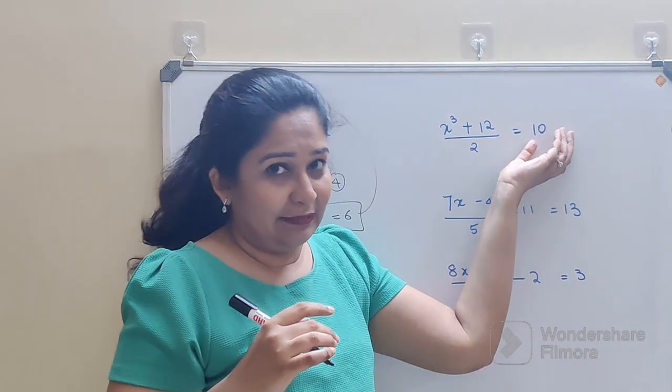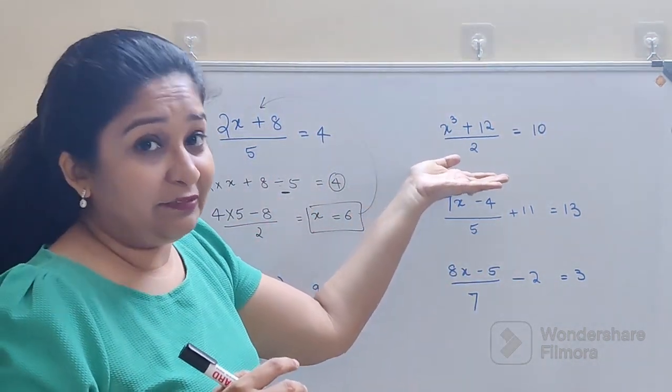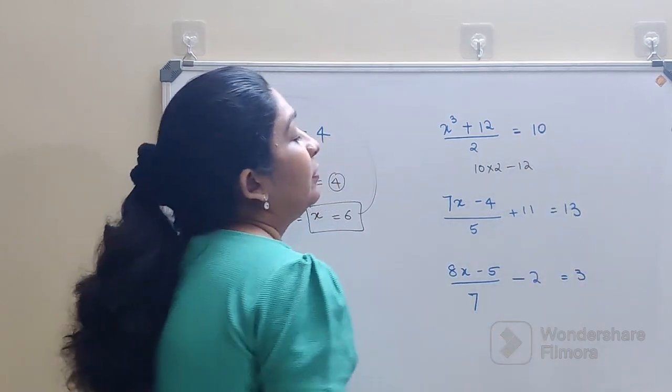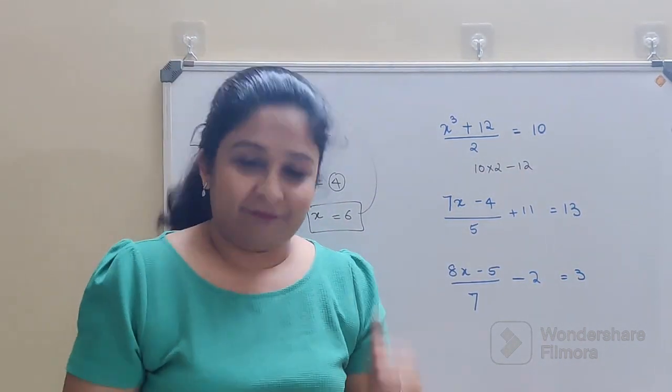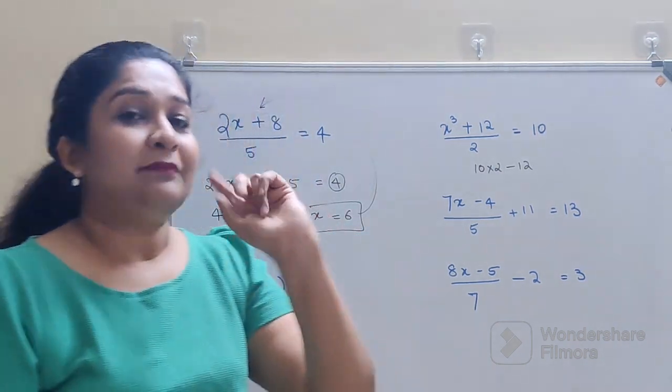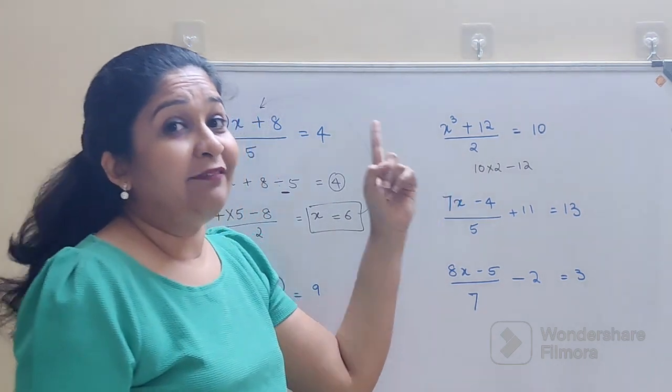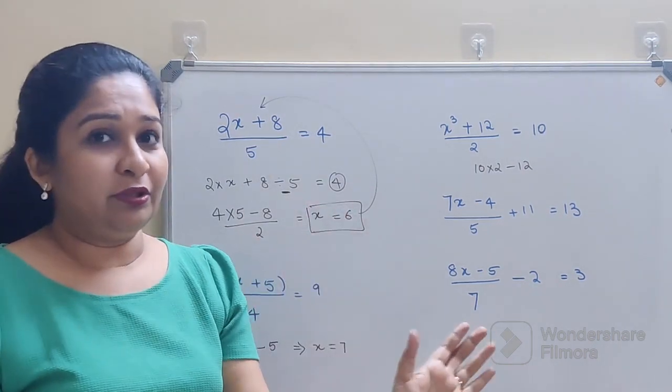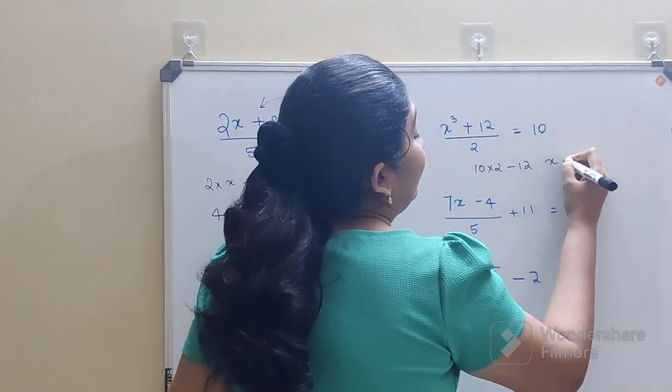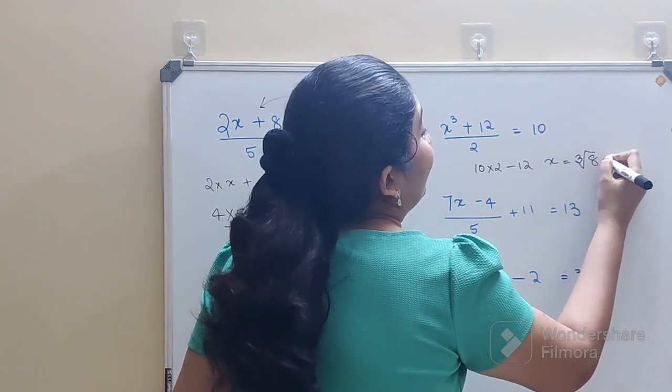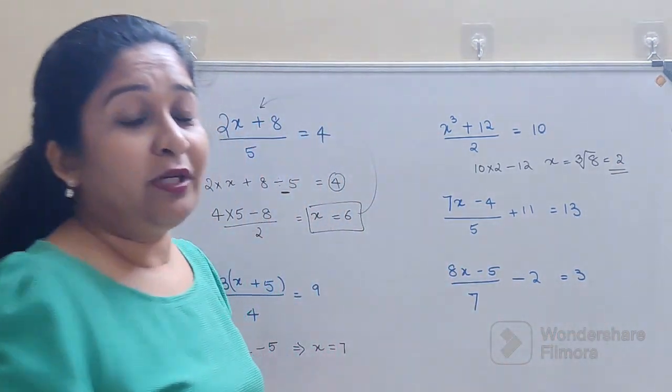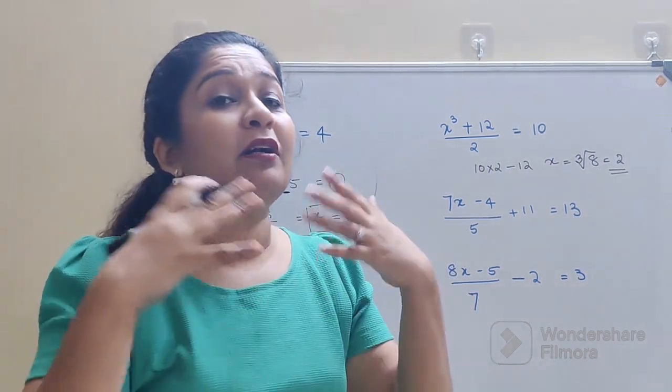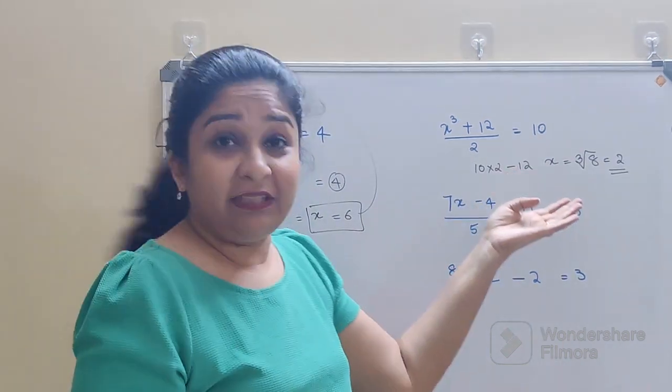So here the rightmost side is 10. And since here the first thing what they are doing is division, so we will do multiplication. So 10 into 2 minus 12. So 10 into 2 gets you 20, minus 12 will get you 8. And then you have cube. So when you try to find just the value of x, you need to do cube root. So here I can say value of x is nothing but cube root of 8, that is nothing but 2. So I hope you all have understood how to do these kinds of sums. Especially when it comes to linear algebra or sometimes in quadratic also, this will be a very, very helpful trick.